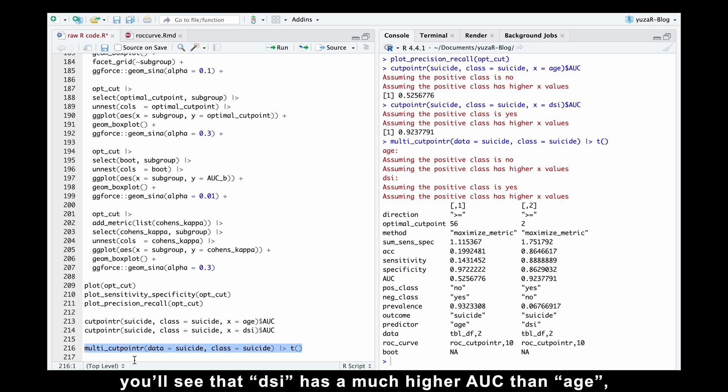The result? Just like running each predictor separately. Namely, you'll see that DSI has a much higher area under the curve than age, so it makes sense to try DSI for the cutpoint. Therefore, use multi-cutpointr to save tons of time.